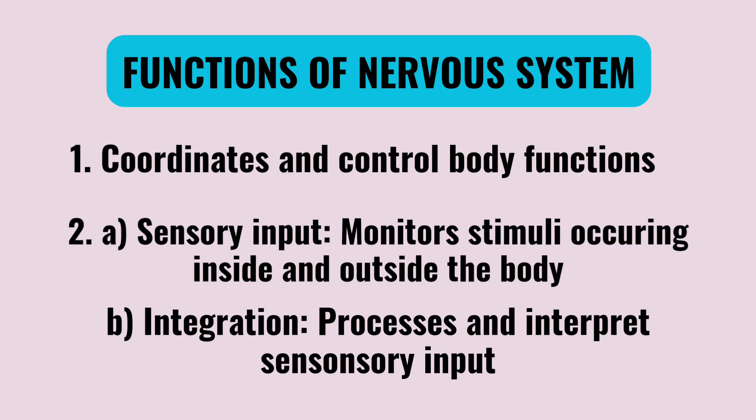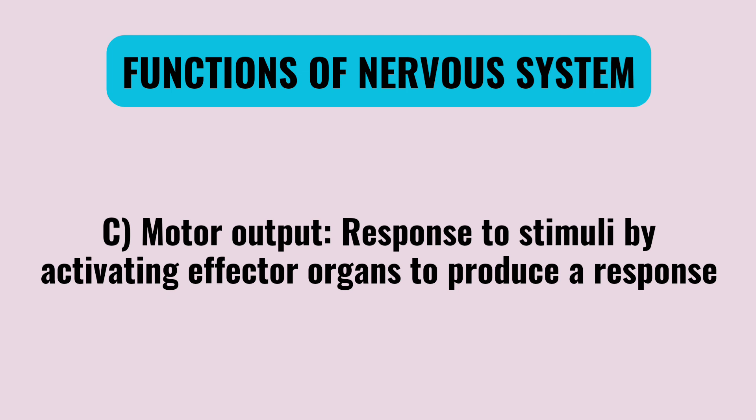Then, integration — it is not just a signal, it is processing. Next, motor output. These three steps are: sensory input, integration, and motor output. Motor output is also a form of processing that produces the exact response of the nervous system. These are the main functions of the nervous system.